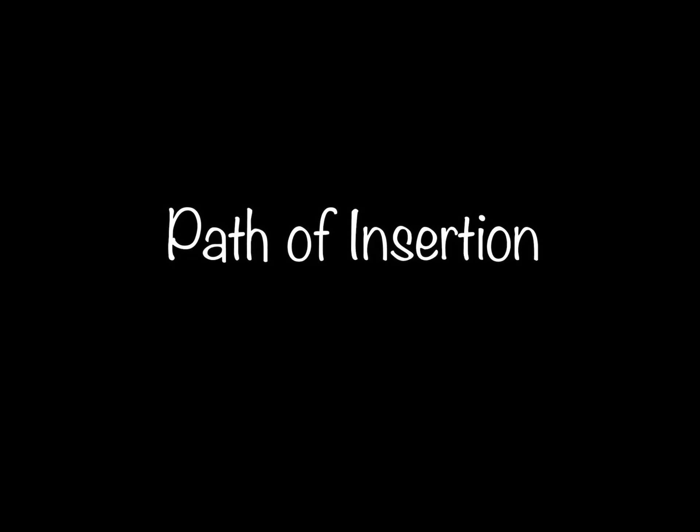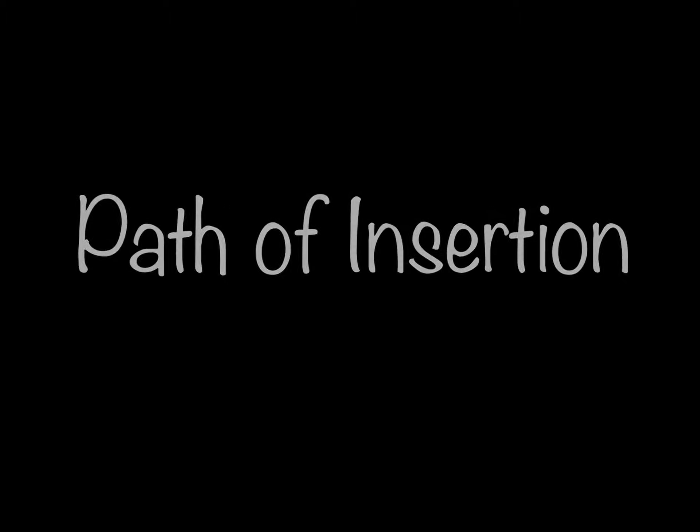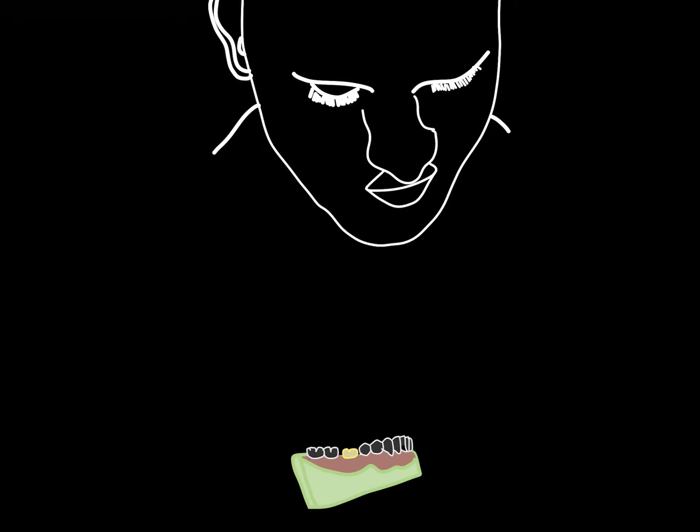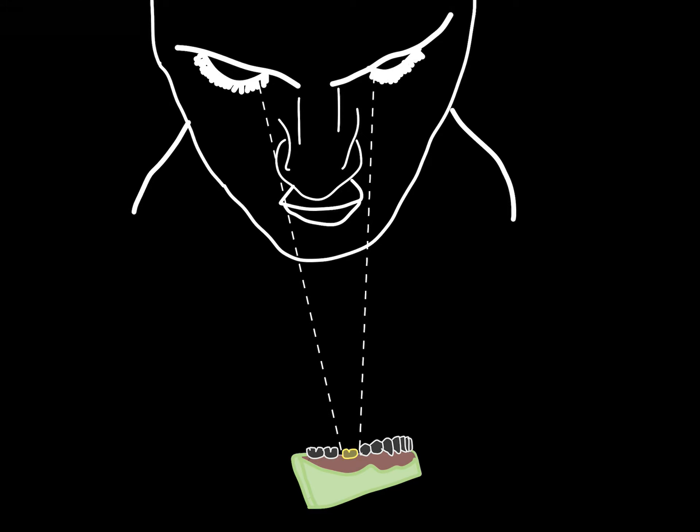Finally, path of insertion. It is an imaginary line along which a restoration will be placed onto or removed from the preparation. So the first step is to survey undercuts which may interfere with insertion. The right method is viewing the occlusal surface of preparation with one eye at a distance of approximately 30 cm, where it is possible to sight down the axial walls of preparation with minimal taper. But if examined with both eyes open, undercuts may remain undetected.